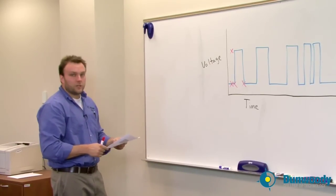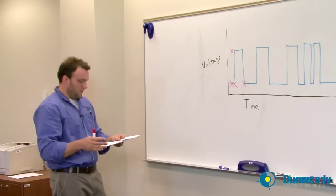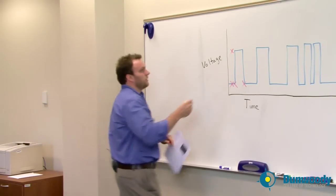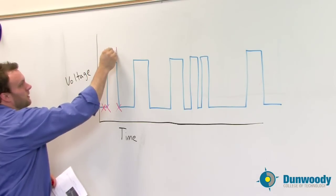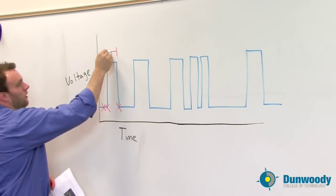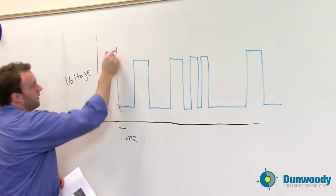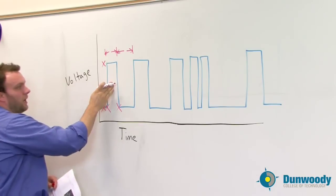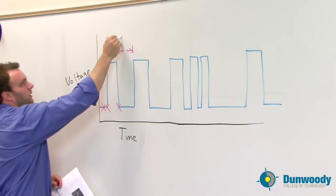The second is duration, as measured in generally milliseconds of on and off time. The duration would be measured from this point to this point, or from here to the end of this. This would be on time and this would be off time.